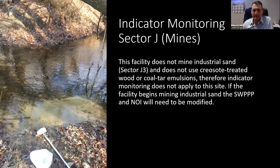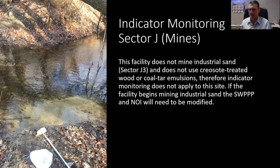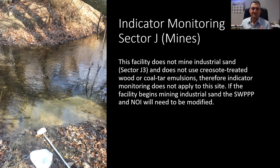Indicator monitoring is more specific than just sector-specific. It's looking for indicators of a certain type of pollutant. There are no limits for these — the EPA is looking for data that would indicate whether these pollutants are of concern in the future. For example, if the facility mines industrial sand — like sandblasting sand or Ottawa sand used in well construction — there's extra monitoring required. If you use coal tar emulsions on any paved surfaces as a sealer, that would also trigger additional indicator monitoring. Industrial sand is different from construction sand and gravel — road base and similar materials.